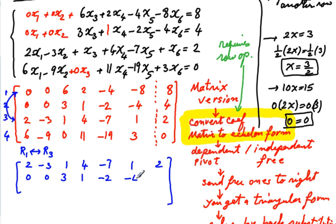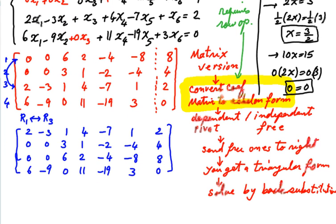So I'll have 2, minus 3, 1, 4, minus 7, 1, 2. Now, once you get good at this, you can do several operations all at the same time. But right now, you just do 6, minus 9, 0, 11, minus 19, 3, 0. We double check, make sure we didn't copy wrong. So this has to be copy of that. If you see any mistake, let me know.